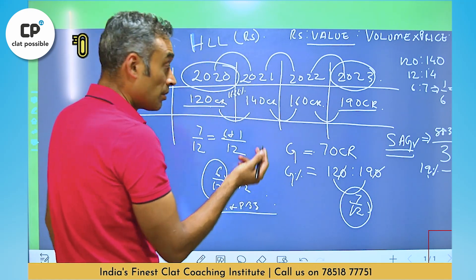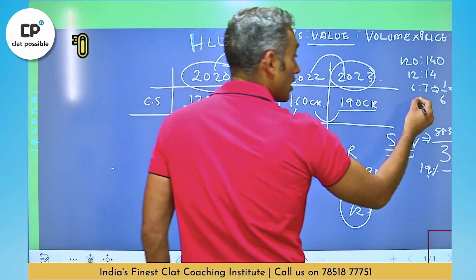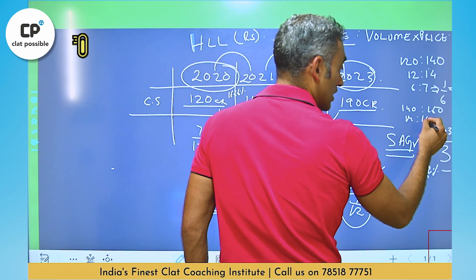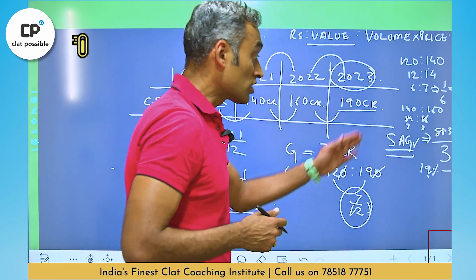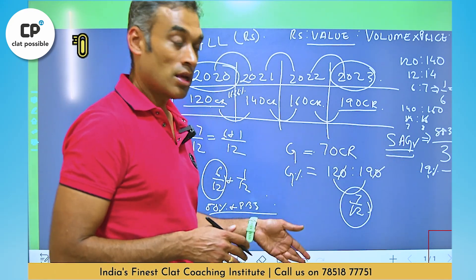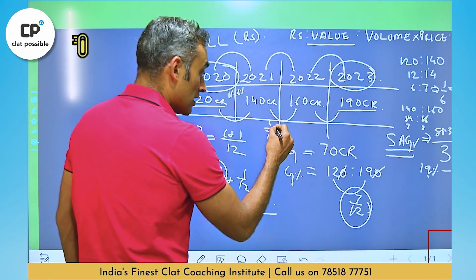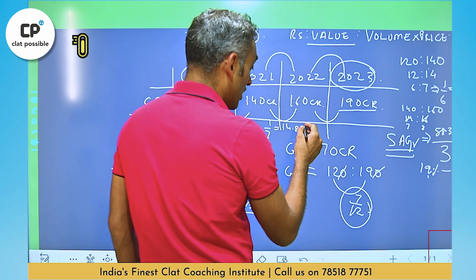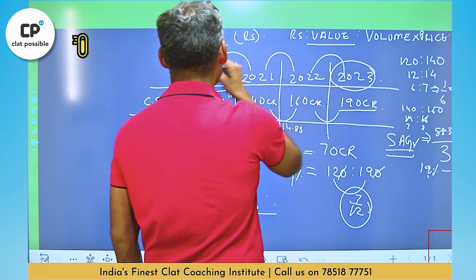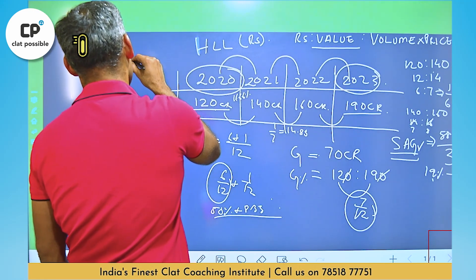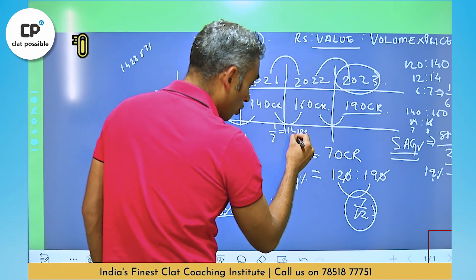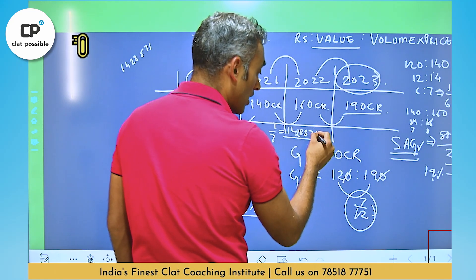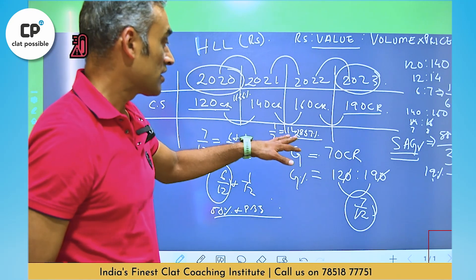From 140 to 160, we see 14 becoming 16, or 7 becoming 8. So the growth is 1 upon 7, which is 14.28% — it's a recurring non-terminating number, but approximately 14.28%.